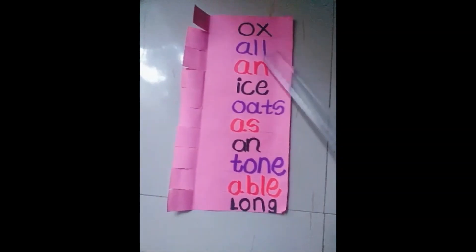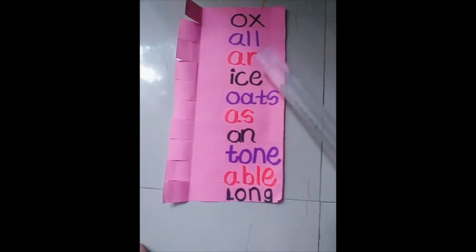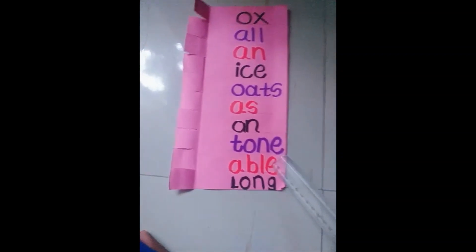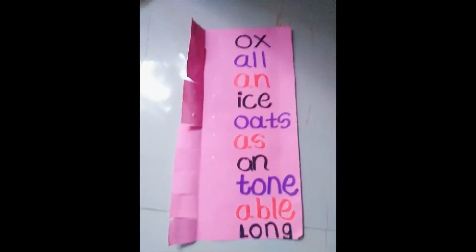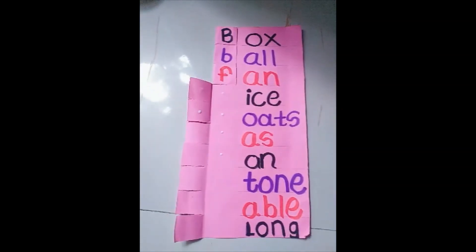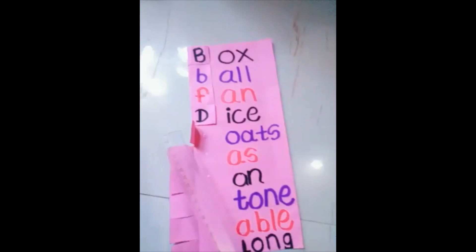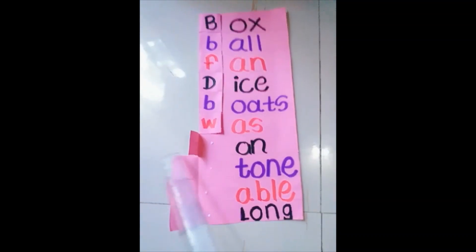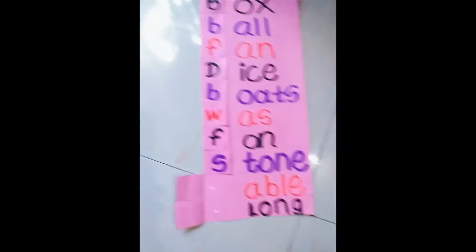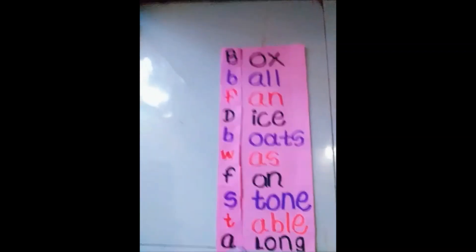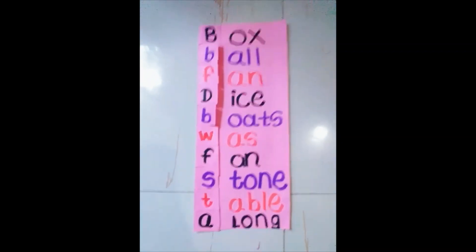I show you the prefix 'add': add B — box, add B — ball, add F — fan, add D — dice, add B — boats, add W — was, add F — fan, add S — stone, add T — table, add A — along. These are all word formation words.